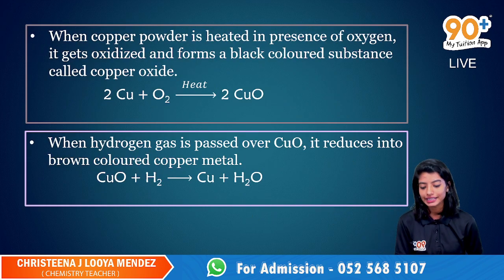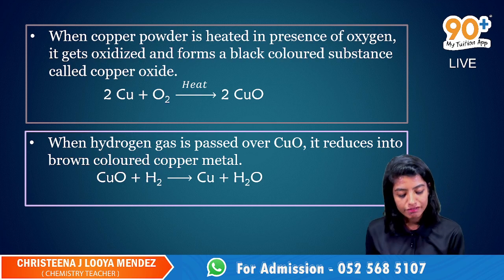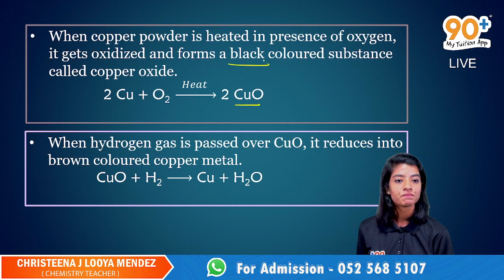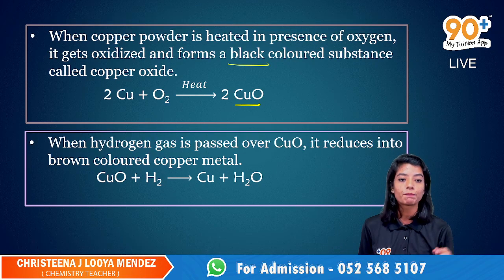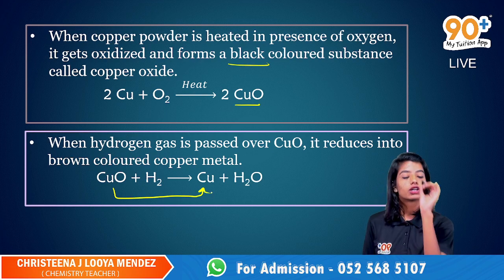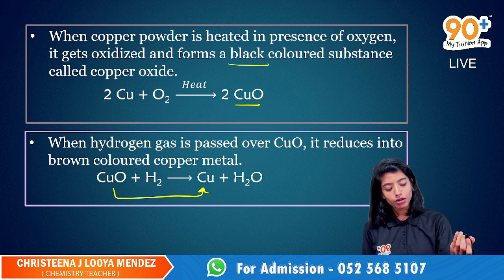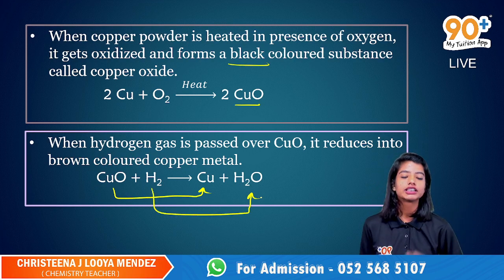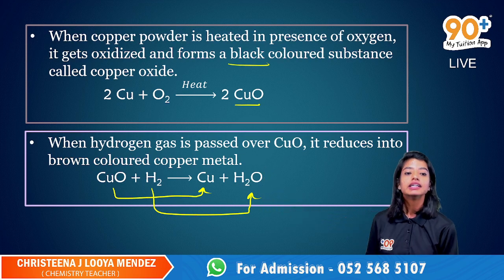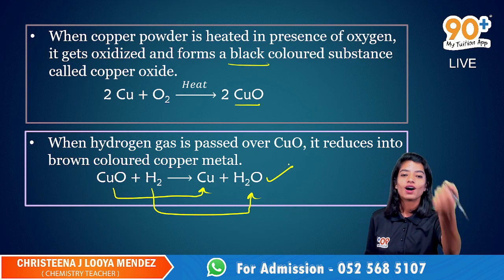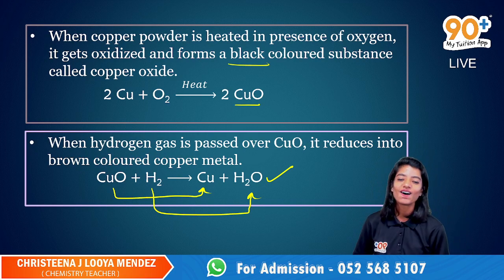Here is the detailed explanation. When copper powder is heated in the presence of oxygen, it undergoes oxidation and forms copper oxide, which is black in color. When we pass hydrogen into copper oxide, it turns back into copper by reduction — copper oxide undergoes reduction to form the brownish metal. And hydrogen gains oxygen, so it undergoes oxidation. Both oxidation and reduction are taking place at the same time, so we call this a redox reaction. The given equation is an example of a redox reaction.